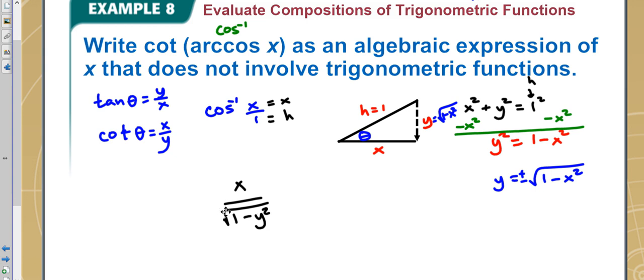That could be our answer, except we don't leave this in the denominator. So to get rid of it, we're going to multiply it by the same square root: square root of 1 minus y squared over the square root of 1 minus y squared, which gives me x times square root of 1 minus y squared all over 1 minus y squared.